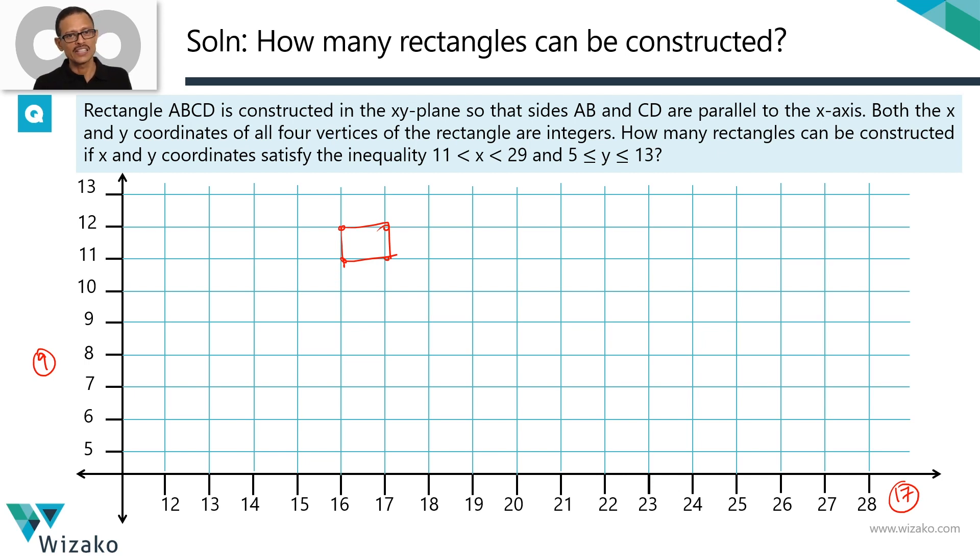So how many meeting points will we have? We have 17 into 9, 153 such meeting points are there. Pick four out of those, you have the answer. 153 C4 seems to be the first temptation to go with.